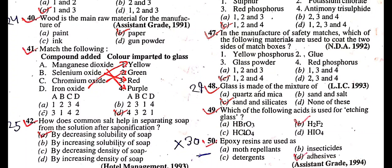Question: Glass is made of the mixture of? Answer is sand and silicate. Question: Which of the following acids is used for etching glasses? Answer is hydrogen fluoride.